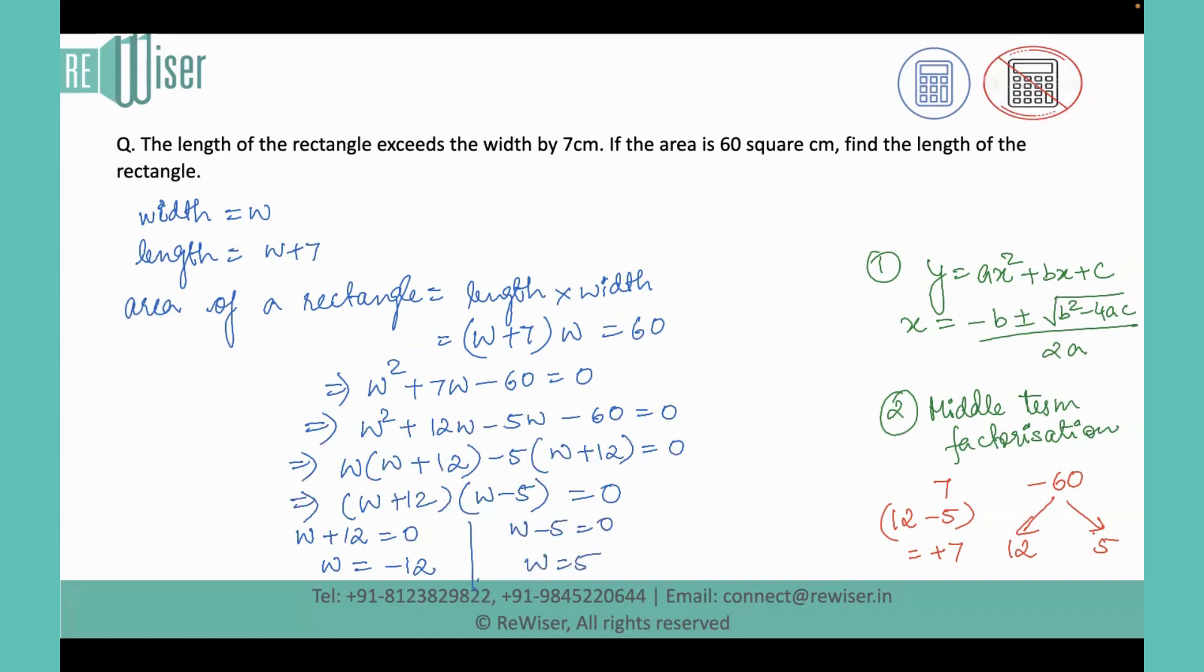We can say that W cannot be negative 12 because length cannot be negative. So the acceptable value of width is 5. And from here, we can say that the length of this rectangle is W plus 7, which will come as 12 centimeter. Thank you.